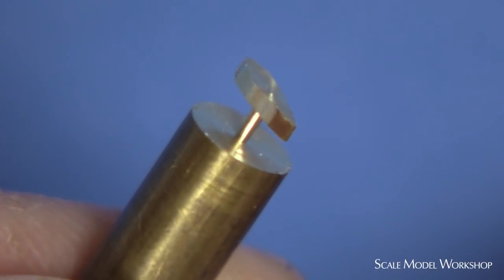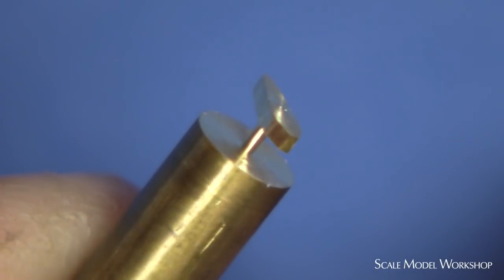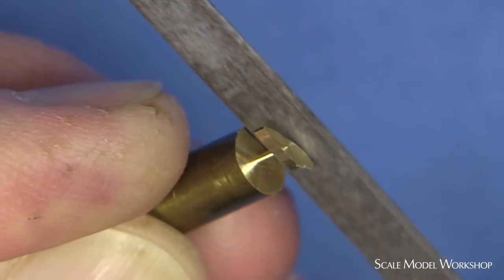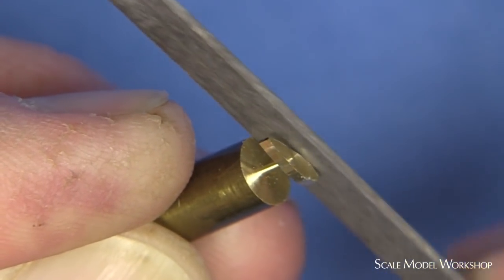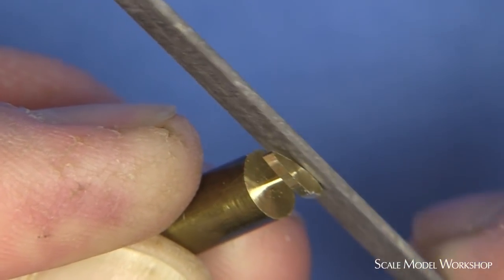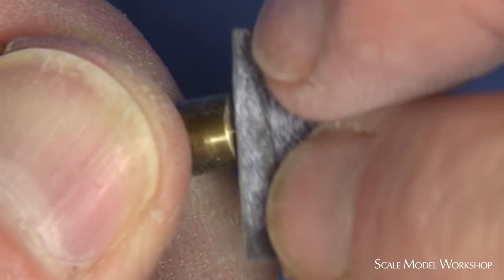The rod stock also serves as the perfect handle for finishing the blister. Shaping starts with a file and finally ends with sandpaper and sanding sponges.